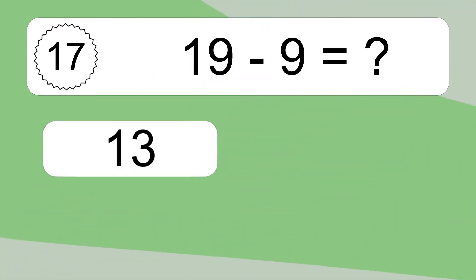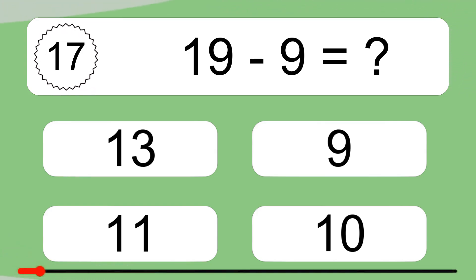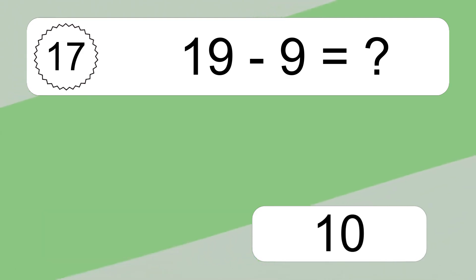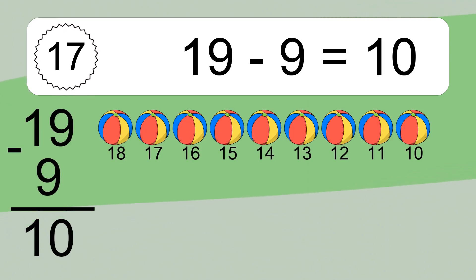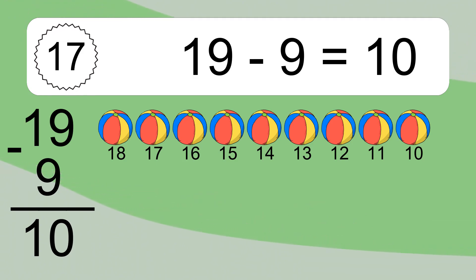19 minus 9 equals what? 19 minus 9 equals 10. Let's count it: 18, 17, 16, 15, 14, 13, 12, 11, 10.